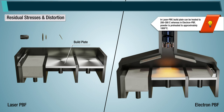In laser powder bed fusion, the build plate can be heated to 200 to 300 degrees Celsius, whereas in electron beam powder bed fusion, the powder is preheated to approximately 1000 degrees Celsius. The specific temperature is dependent on the material being printed.